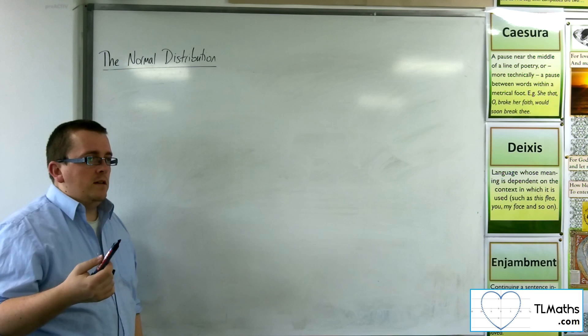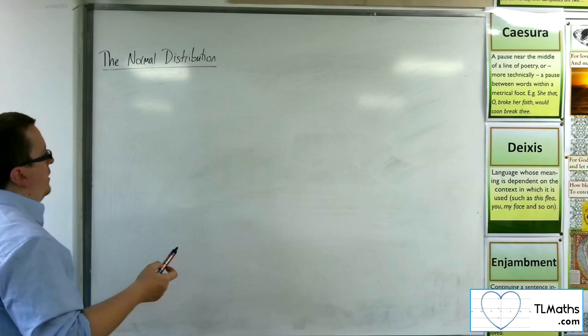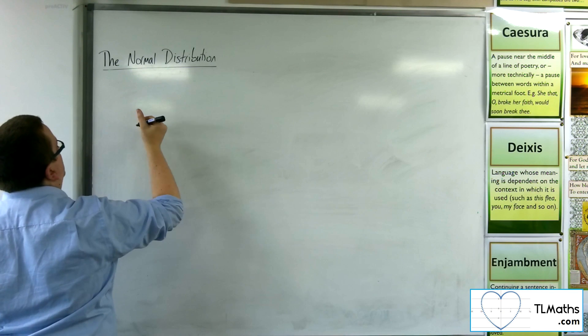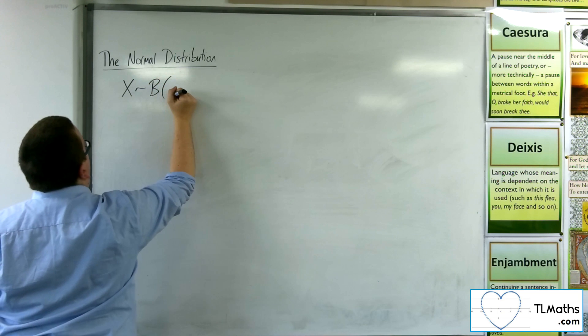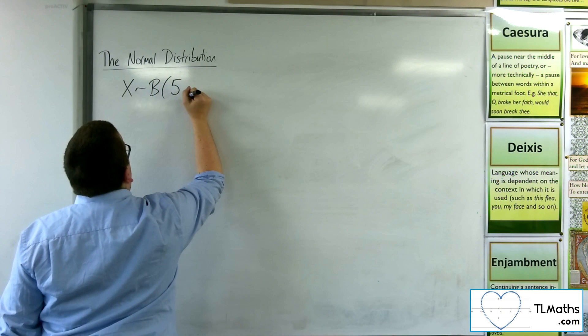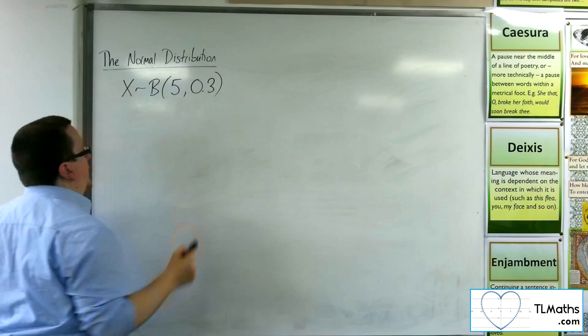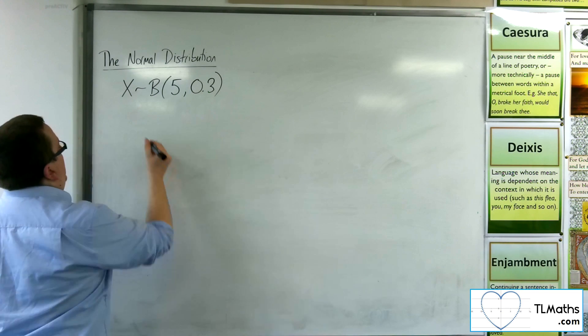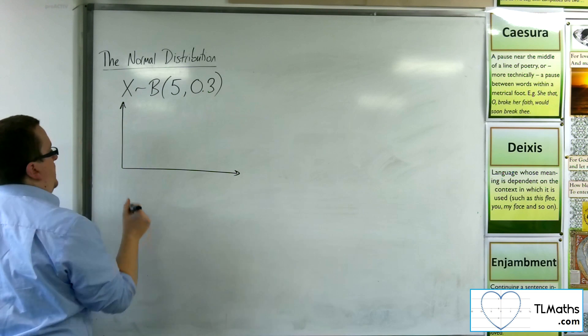Now, that might not seem like a big deal, but it is. Because if we think about, let's just think about a basic one, like x being binomially distributed with n as 5, and a probability of success as, let's say, 0.3. Then what I could do is I could draw a stick graph to represent this distribution.